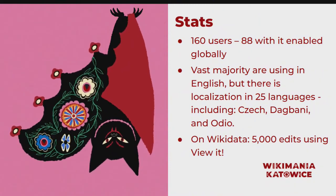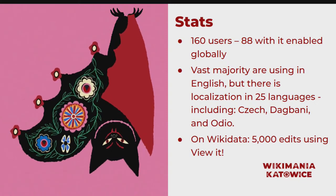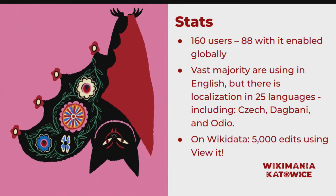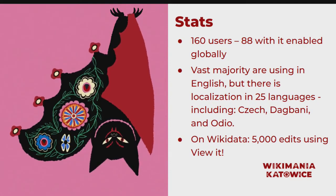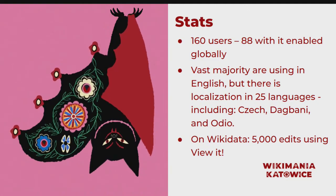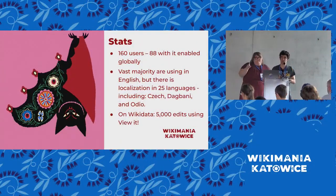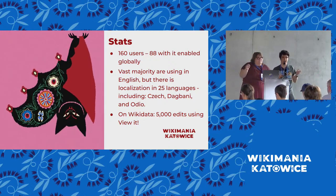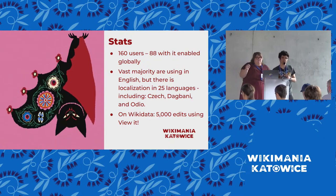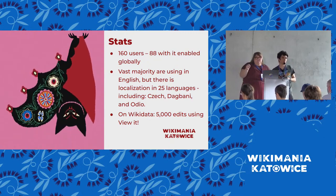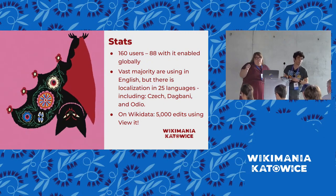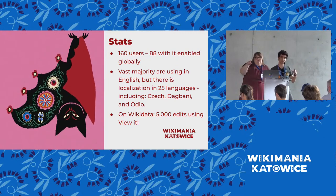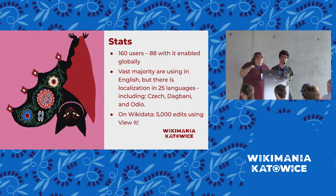We've also experimented with how we can do this without it being a JavaScript script — for example, can we have a Lua function, a Lua template that does these queries and embeds the images in an article, so you can just add a template to display these images? But there is a limitation: Scribunto, the Lua library, doesn't have structured data integration yet. Maybe wiki functions down the line — hopefully there'll be more opportunities to build these tools without requiring opt-in JavaScript.